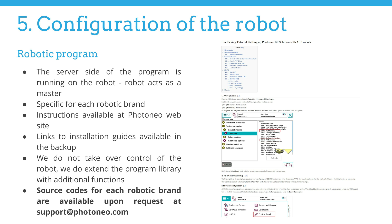The communication between the robotic controller and vision controller is done via a socket on a specific port. The server side of the program is running on the robot — the robot acts as a master. Our concept was to maximize the skills of the robotic programmers so they can utilize all their experience gained previously. In order to support this approach, the server side communication routine is always implemented in the native language specific to the robot brand. Instructions on how to install the package and use commands for each brand are available in the vision controller or by inquiry to support at photoneo.com. Source codes for each robotic brand are available upon request.